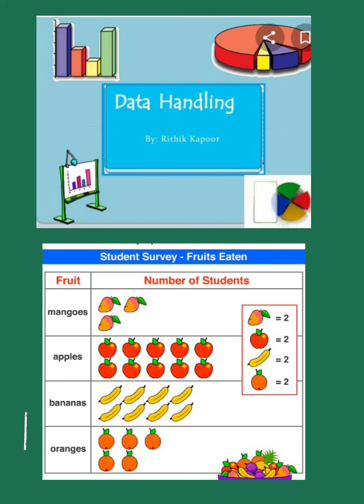Similarly we can get information about the oranges also. There are five oranges given. Same way, one orange equals two students. So just looking at the pictures we can get information. This is called a pictograph. Clear kids, all of you?